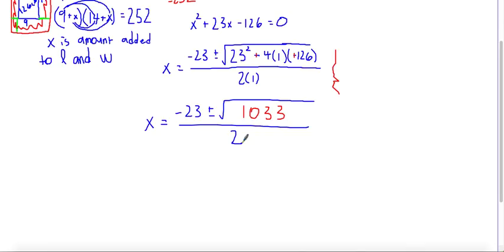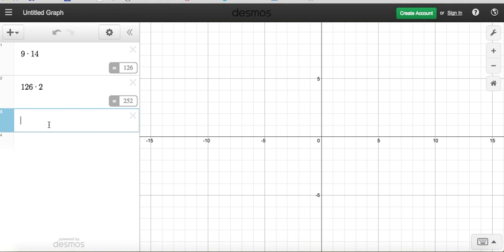Now because we're solving for the length and width of a rectangle, at this point we want to get an approximate answer because saying that it's negative 23 plus the square root of 1033 divided by 2 is not really a helpful answer. So to get an approximate answer, we'll just use a calculator. So over here I have negative 23 plus the square root of 1033 divided by 2.